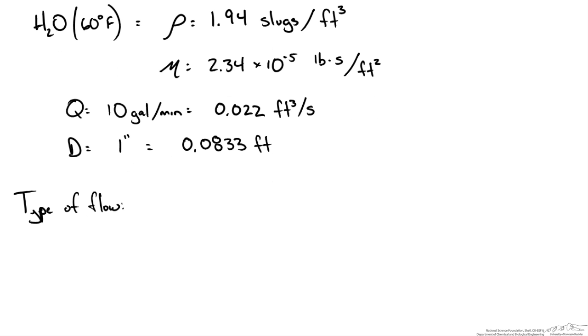Now to determine the type of flow, whether it is laminar or turbulent, we use the dimensionless Reynolds number. The Reynolds number is represented by the density of the fluid times the velocity of the fluid times the diameter over the viscosity. We have the density, the diameter, and the viscosity but we haven't calculated the velocity. And we know we can convert the volumetric flow rate to a velocity using the cross sectional area of the pipe.